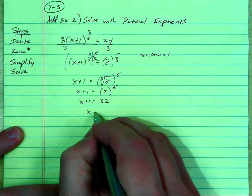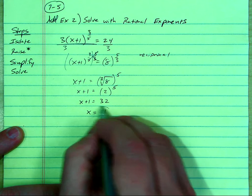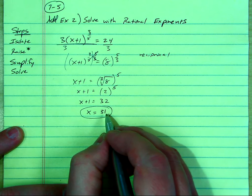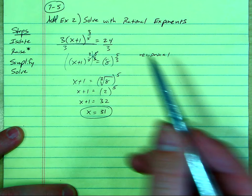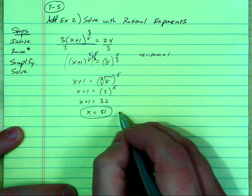And then subtract 1 from both sides. We get x equals 31. And you can plug that back in to check. If you plug it back in here, it will in fact work the whole equation. So that's the correct answer.